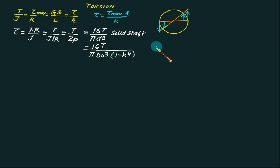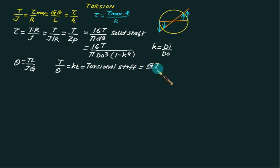From the first equation, we can obtain theta. So we have theta equals TL divided by JG. Then we can write T divided by theta is the same as kt, called torsional stiffness. The value of kt is GJ/L.